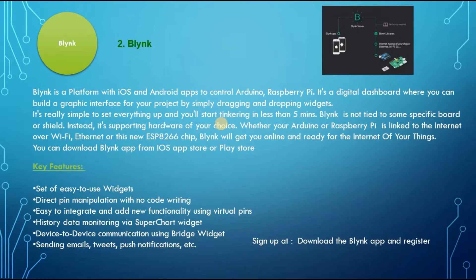The second favorite open source IoT platform I used for my Raspberry Pi and Arduino projects is Blink. Blink is a platform with iOS and Android apps to control Arduino and Raspberry Pi. It's a digital dashboard where you can build a graphic interface for your project by simply dragging and dropping widgets. Blink is not tied to some specific board or shield; instead, it supports hardware of your choice. Whether your Arduino or Raspberry Pi is linked to the Internet over Wi-Fi, Ethernet, or the ESP8266 chip, Blink will get you online and ready for the Internet of your things.